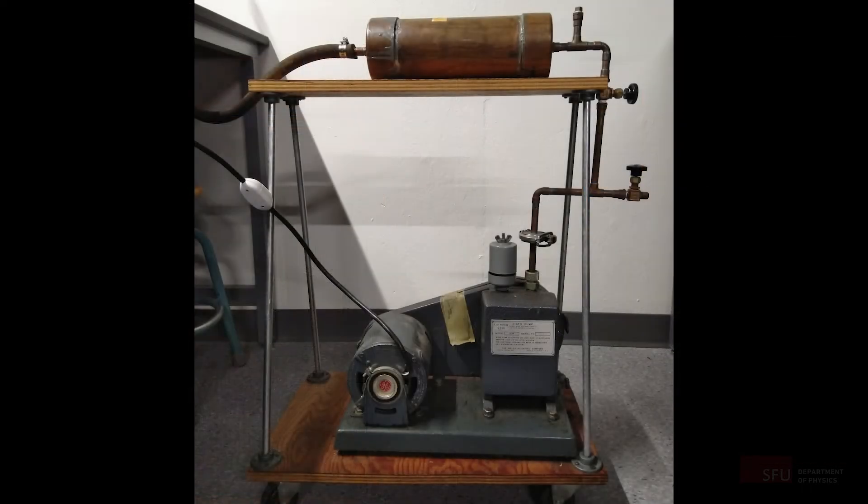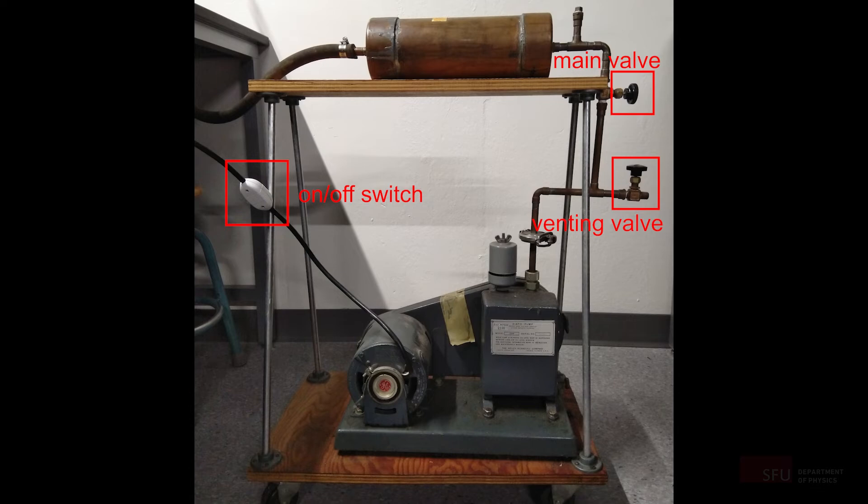For setup number one, the pump is activated by a simple on-off switch here. When using the pump, make sure that the main valve here is completely opened counterclockwise, and the venting valve here is fully closed clockwise. Do not leave the pump connected to the vacuum cell under the vacuum for more than two minutes. Otherwise, oil from the pump could diffuse into the cell. For the same reason, please let air into the pump through the venting valve when you are done using it.